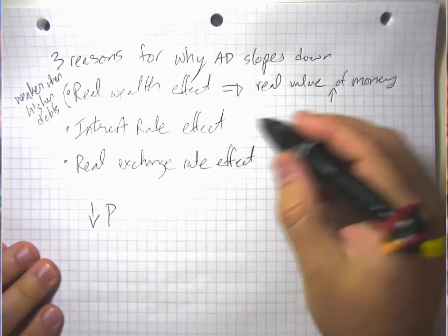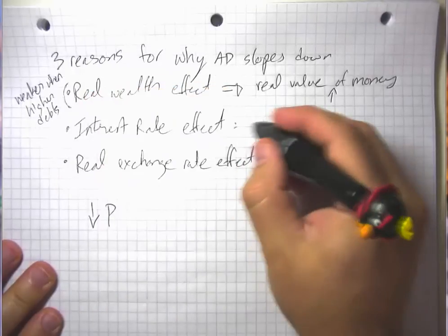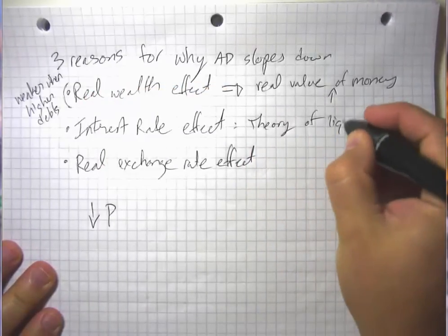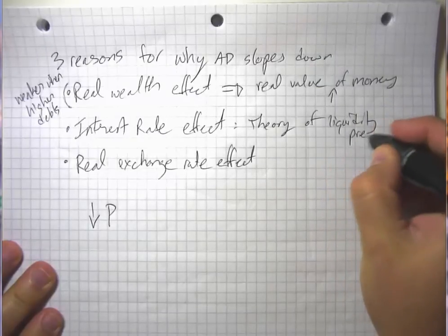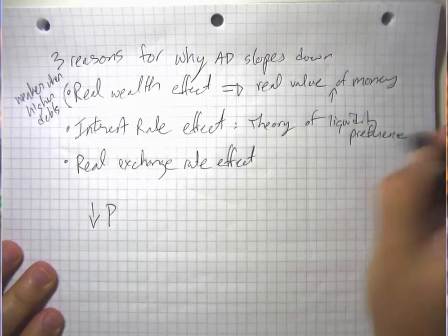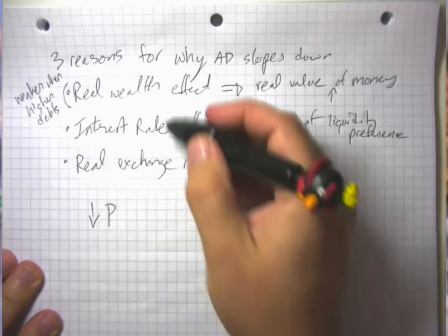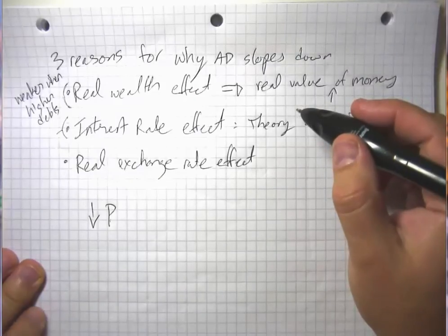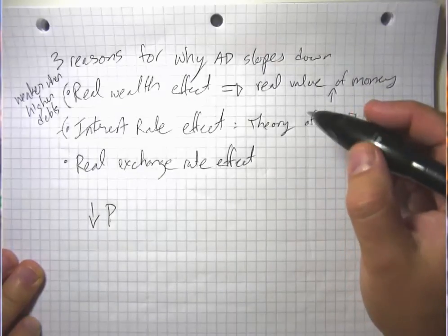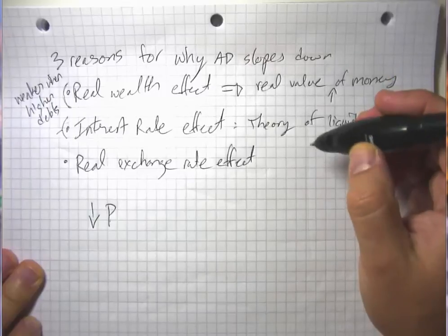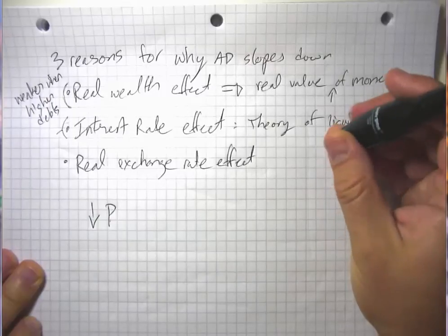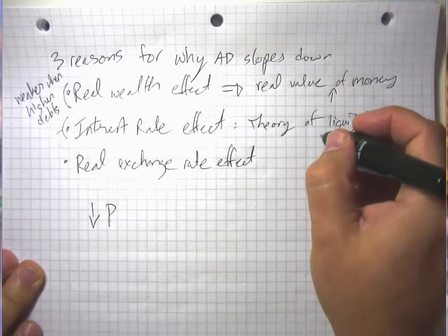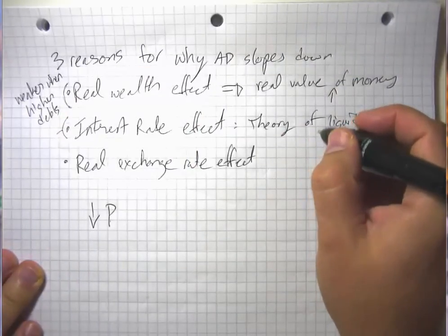The interest rate effect we'll see in a second here. This is what we call the theory of liquidity preference. The idea here is that a lower price level decreases the demand for money because you don't need as much money to get through all of your transactions, and therefore a lower demand for money produces lower interest rates. This is going to be limited in effect when interest rates are near zero.